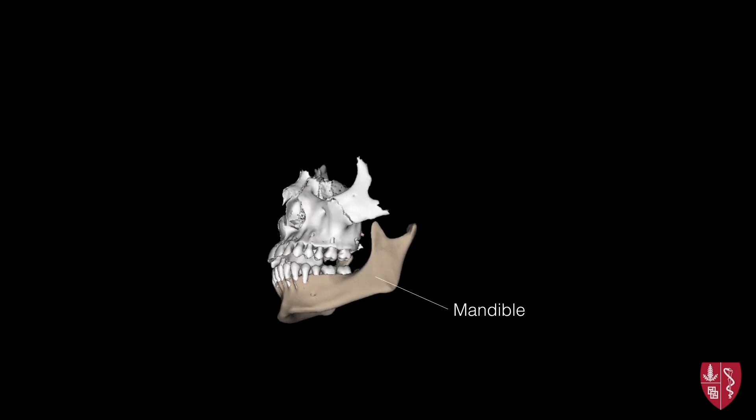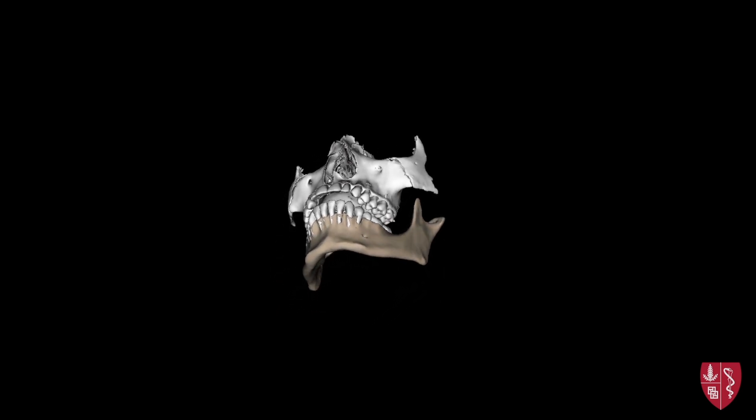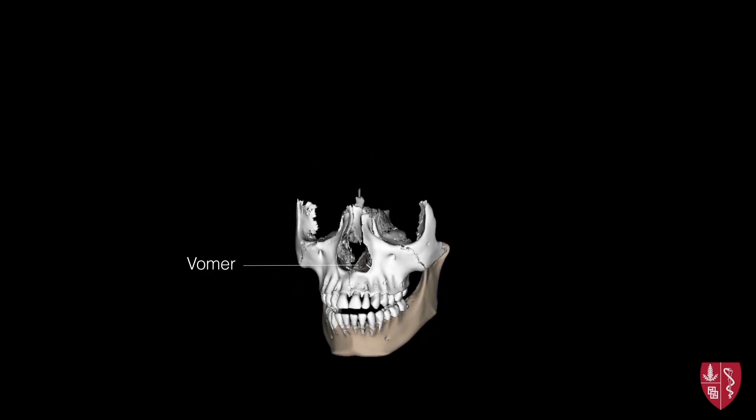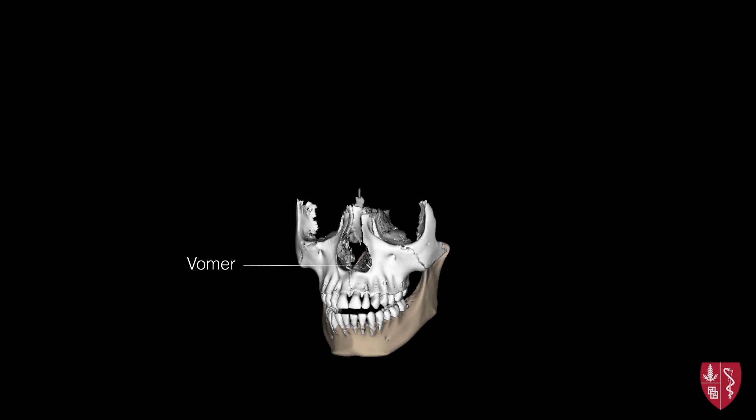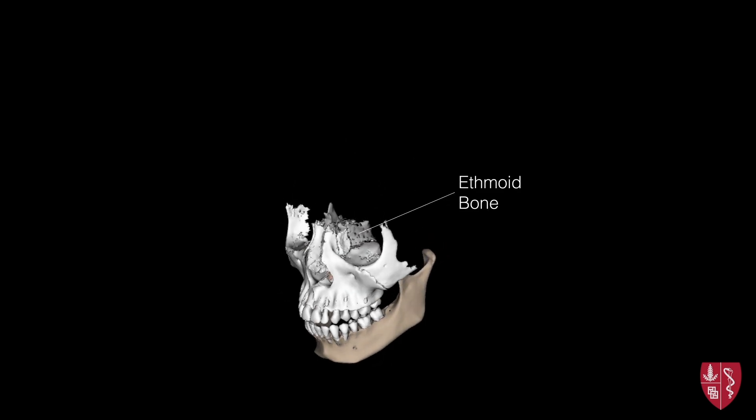The mandible, most inferiorly and commonly referred to as the jaw. The vomer, forming the inferior aspect of the nasal septum. And the ethmoid bone, which helps to form the medial aspect of the orbit.